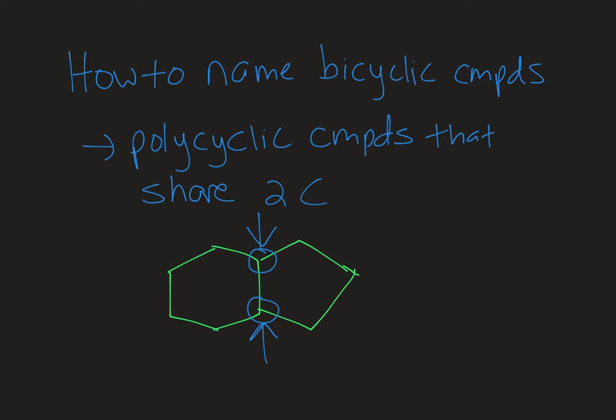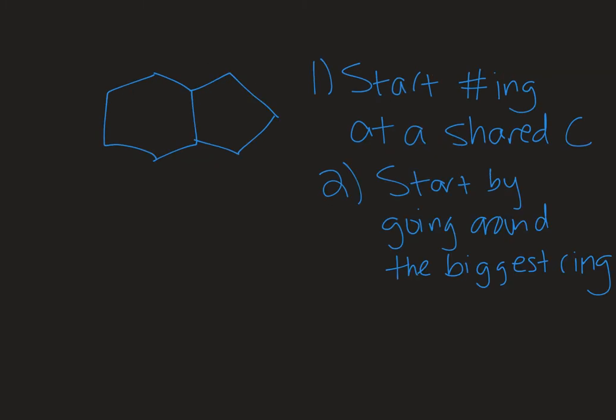There is an accepted way to name these. Here's our molecule from the previous slide. We are going to start numbering at one of the two shared carbons. It doesn't matter which one in this instance because I don't have any substituents. We'll put some substituents on after we get down how to name the basic bicyclic structure. I need to start at either one of these two shared carbons.